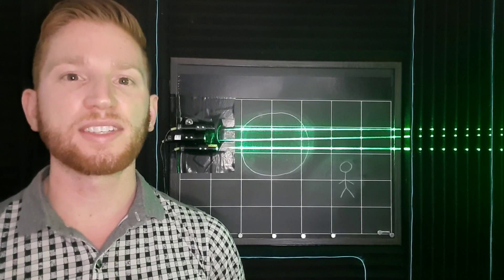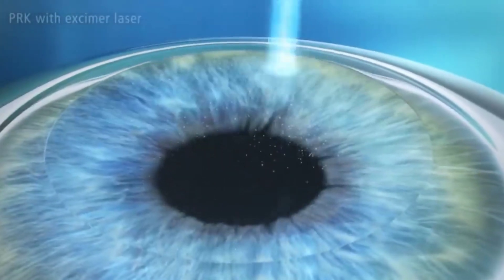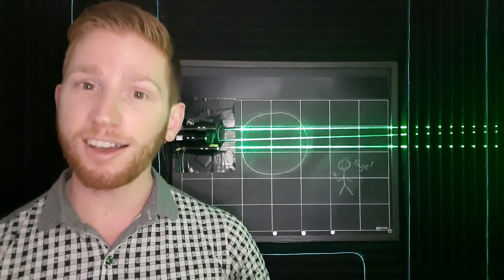Laser eye surgery can also correct for astigmatism by changing the shape of your cornea so that it's more symmetrical. And that's it. Please comment down below to let me know what other eye-related ideas I should talk about.